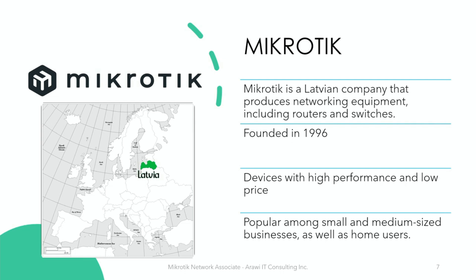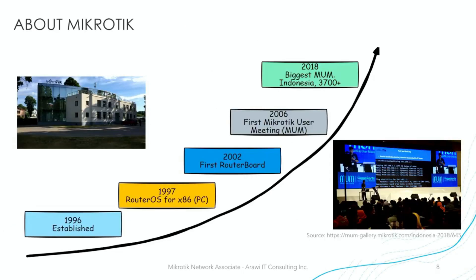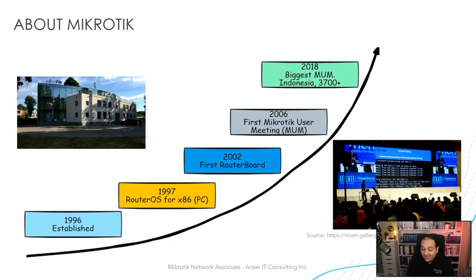MikroTik offers a wide range of categories for products, so we'll be talking about some of those in this class. MikroTik was founded in 1996. RouterOS was launched in 1997, initially only for x86 systems — that's a PC. So basically at that moment in time, we needed to install RouterOS on a PC.